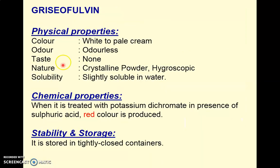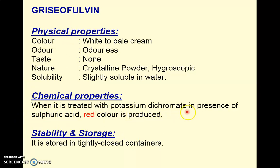The last antibiotic is griseofulvin, a non-classifiable antibiotic whose structure and chemical name are not required for examination purposes. Its physical properties: it is a white to pale yellow cream-colored, odorless crystalline powder, hygroscopic and slightly soluble in water. For its chemical identification, when treated with potassium dichromate in the presence of sulfuric acid (acidic media), it gives a red color — this is the qualitative color test for identification of griseofulvin.